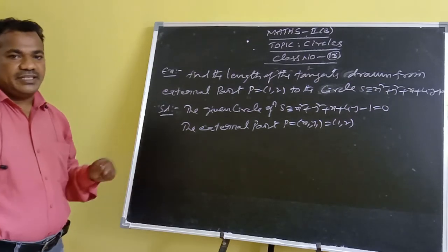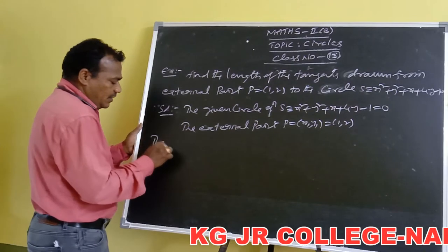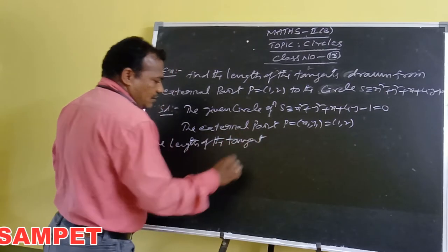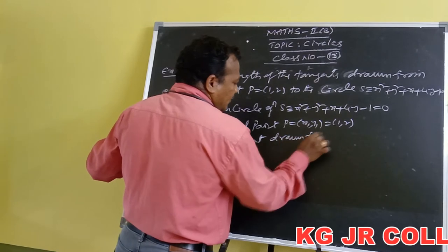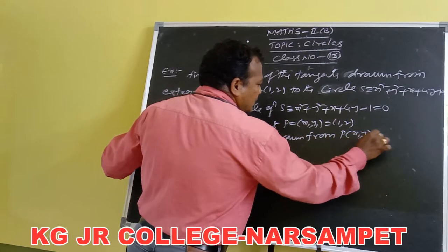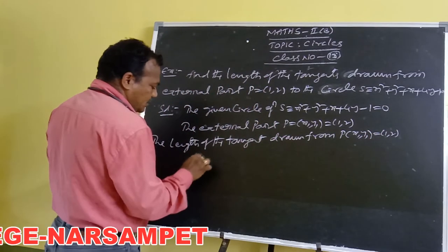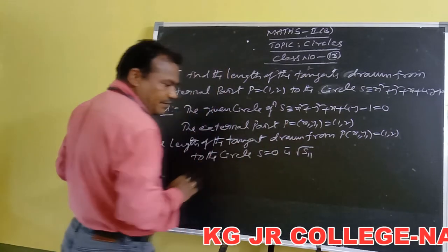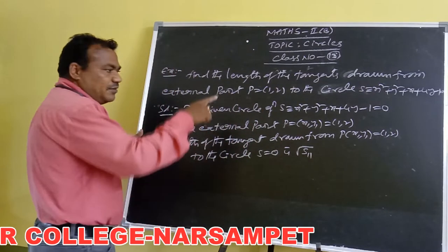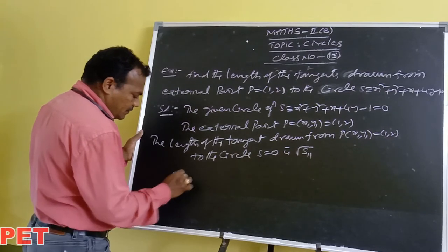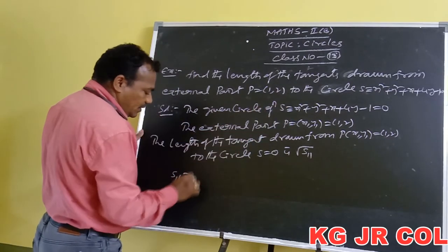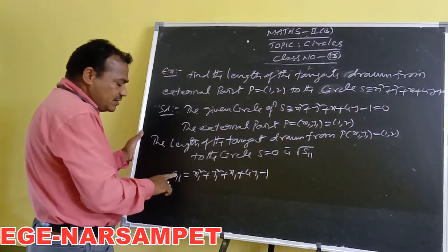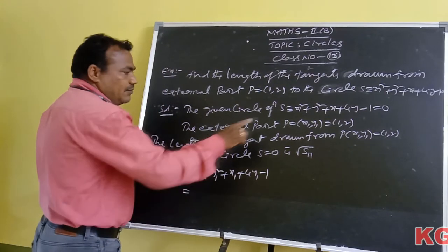To find the length of the tangent drawn from point P(x₁, y₁) = (1, 2) to the circle S = 0, we use the formula: length = √S₁₁. We first calculate S₁₁ for the given circle: S₁₁ = x₁² + y₁² + x₁ + 4y₁ - 1.